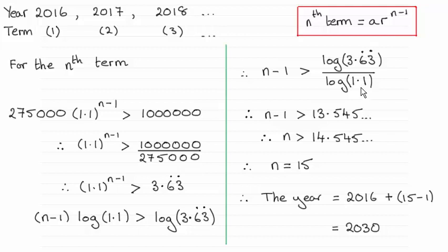So then just simply add 1 to both sides and you get 14.545 and so on. We're looking for the smallest integer that is greater than this, and that has to be 15.